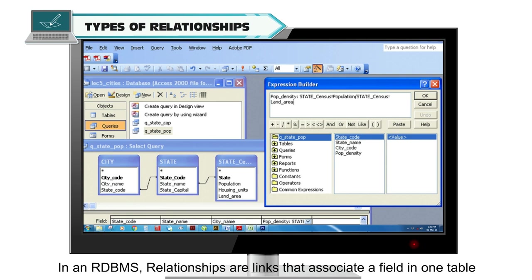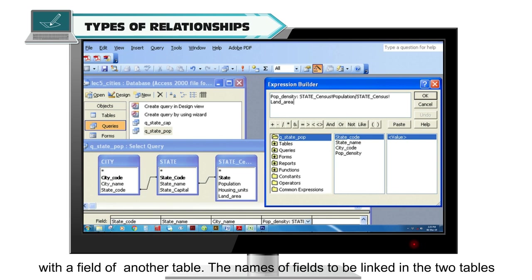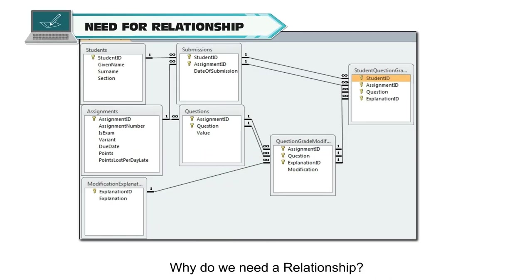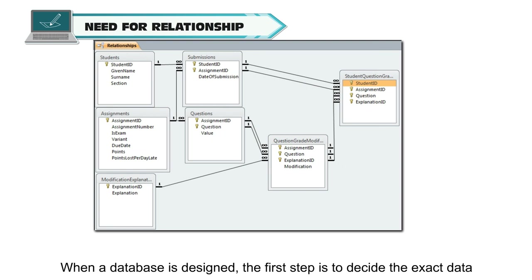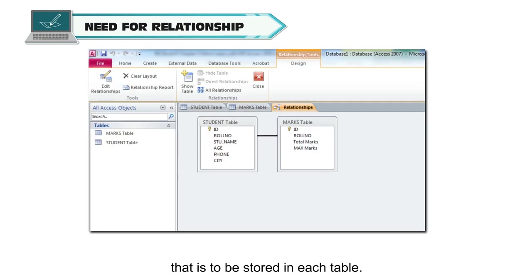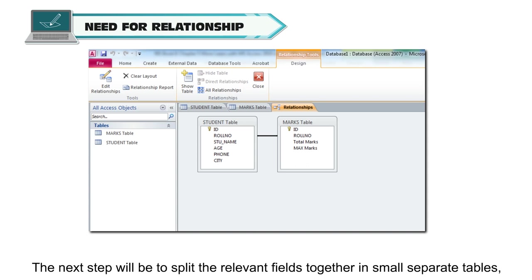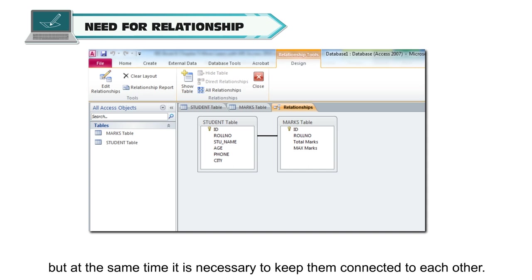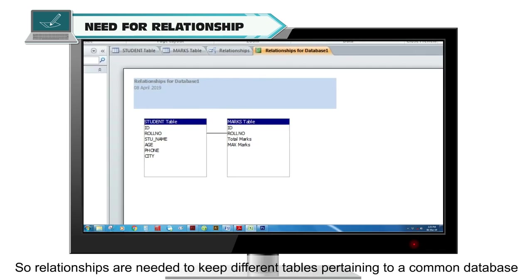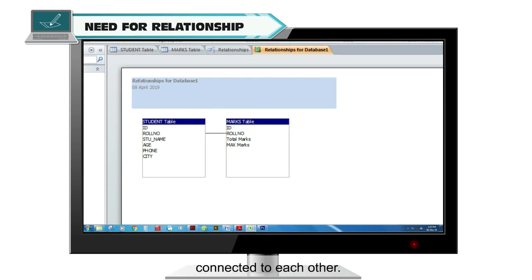In an RDBMS, relationships are links that associate a field in one table with a field of another table. The names of fields to be linked in two tables can be different, but their data types must be the same. When a database is designed, the first step is to decide the exact data to be stored in each table, then split relevant fields into small separate tables while keeping them connected. Relationships are needed to keep different tables pertaining to a common database connected to each other.